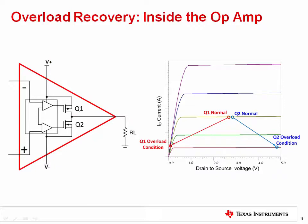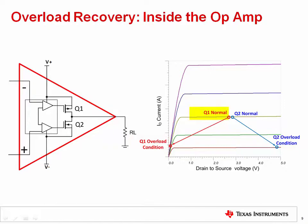The overload condition occurs when an amplifier is driven beyond its output swing limits. In this example, if the output is driven very close to the positive supply V+, the output transistor Q1 becomes saturated while transistor Q2 is nearly cut off. Also notice that transistor Q1 is in the ohmic region of its operating curve, as opposed to the active region where it normally operates. Overload recovery is the time required for all internal transistors in the output stage to transition from an abnormal state — whether saturated or cut off — to a normal state.